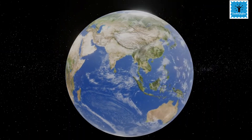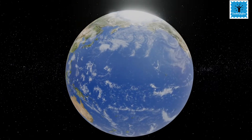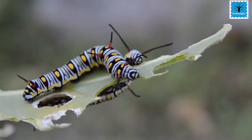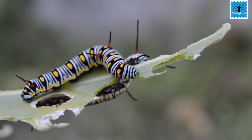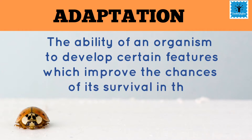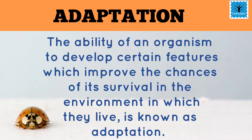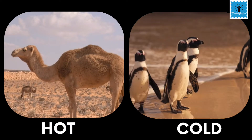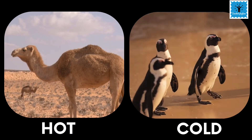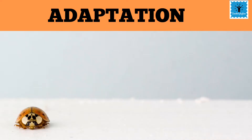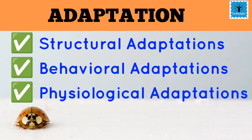Climate on the earth varies in different regions and climate plays a great effect on all living organisms. Animals are adapted to survive in these conditions. Adaptation means the ability of an organism to develop certain features that help them to survive in the environment in which they live. For example, animals living in very hot and cold climates have some special features to protect themselves. Adaptations are of three types: structural adaptations, behavioral adaptations, and physiological adaptations.